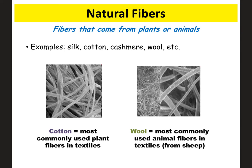There are two different types of fibers. The first type is natural fibers, which come from plants or animals. Examples include silk, cotton, cashmere, and wool. Cotton is the most commonly used plant fiber, and wool is the most commonly used animal fiber. Under the microscope, natural fibers don't look as perfectly arranged because they come from nature.